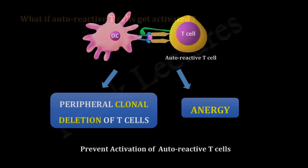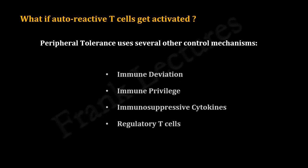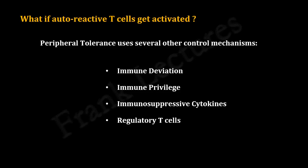But what if autoreactive T lymphocytes somehow get activated? Peripheral tolerance has several other control mechanisms for this, which control the quality, intensity, and duration of the resulting immune response.